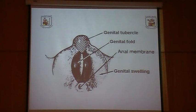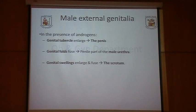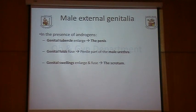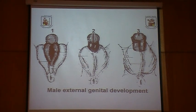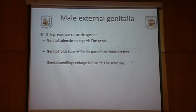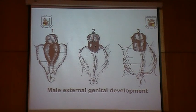In males, because of the presence of testosterone, the external genitalia develops into male external genitalia. The genital tubercle enlarges to form the penis, the genital folds fuse together forming the penile part of the male urethra, while the genital swellings enlarge and fuse to form the scrotum, as you can see from the diagram.